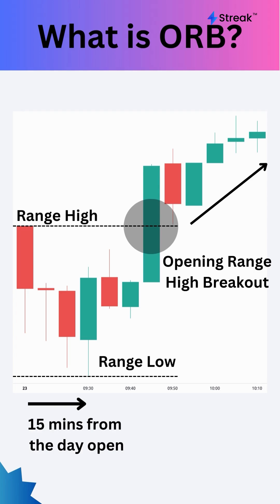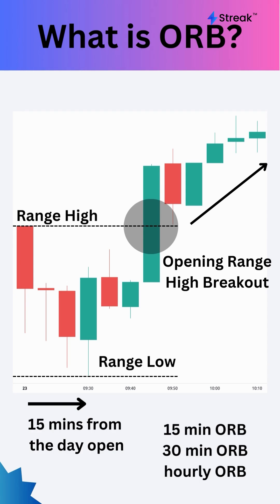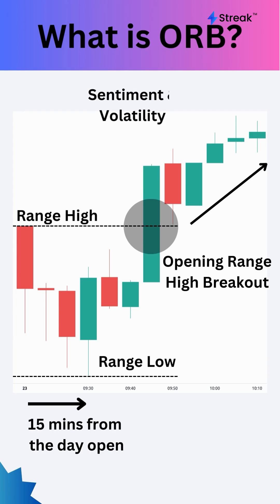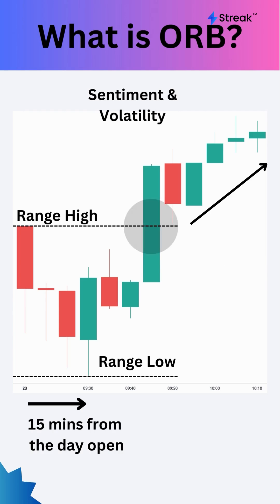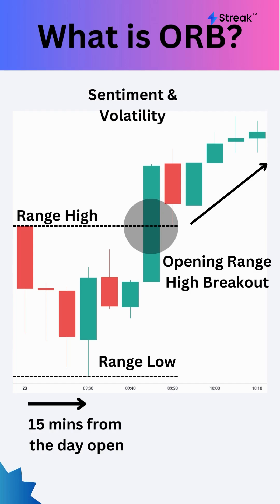The opening range is determined by the high and low of a specified time period, such as 15 minutes, 30 minutes, or 1 hour. The idea behind this strategy is that the opening range reflects the sentiment and volatility of the market, and that a breakout from the range indicates a potential trend continuation or reversal.